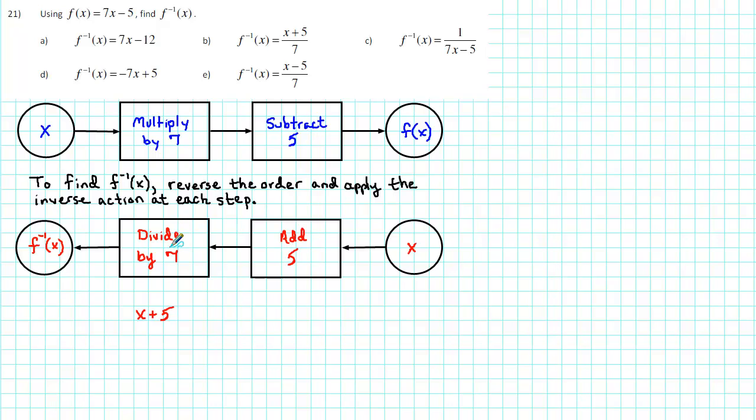Next, divide the result by 7. That result is equal to f inverse of x.